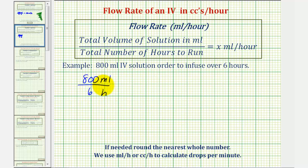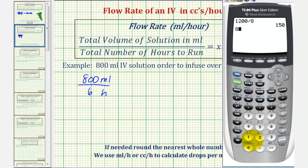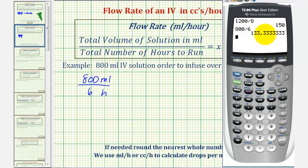Let's first determine this on the calculator. We would have 800 divided by six. Rounding to the nearest whole number, the tenths place value determines whether we round up or down. If this digit is five or more, we round up. If it's four or less, we round down. And since we have a three, we round down — so this would round to 133.